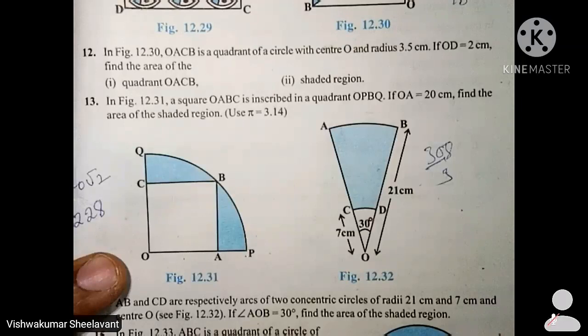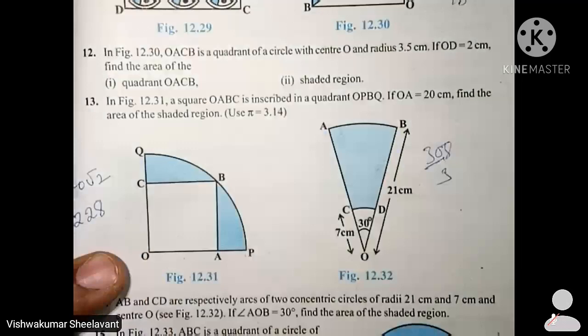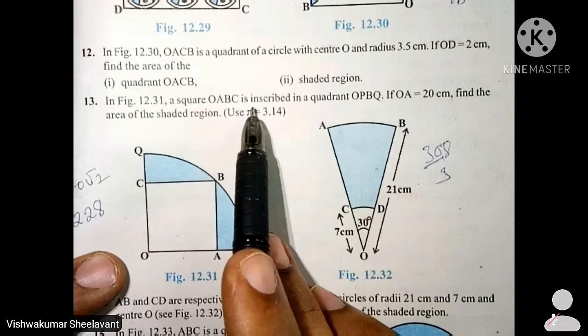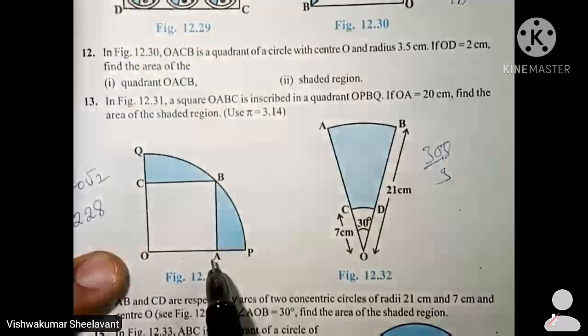Question number 13. In figure 12.31, that is here, a square OABC is inscribed in a quadrant. In this quadrant, OABC is a square.